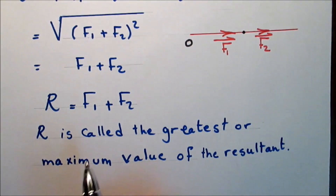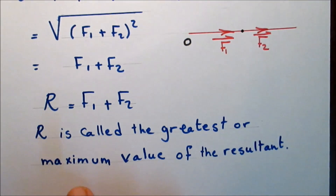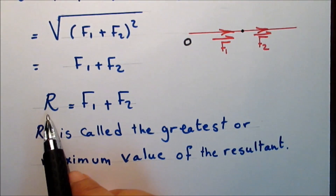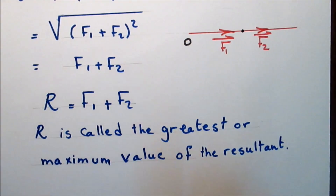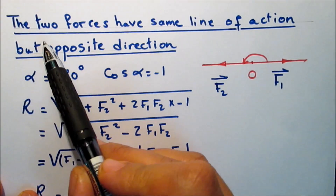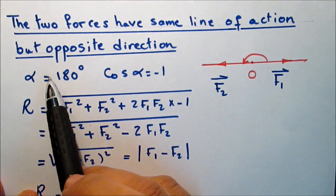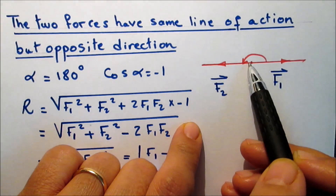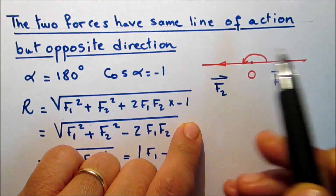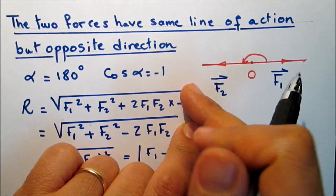In this case the resultant is called the greatest or maximum value of the resultant: R equals F1 plus F2. If the two forces have the same line of action but opposite directions, the angle between them is 180 degrees.